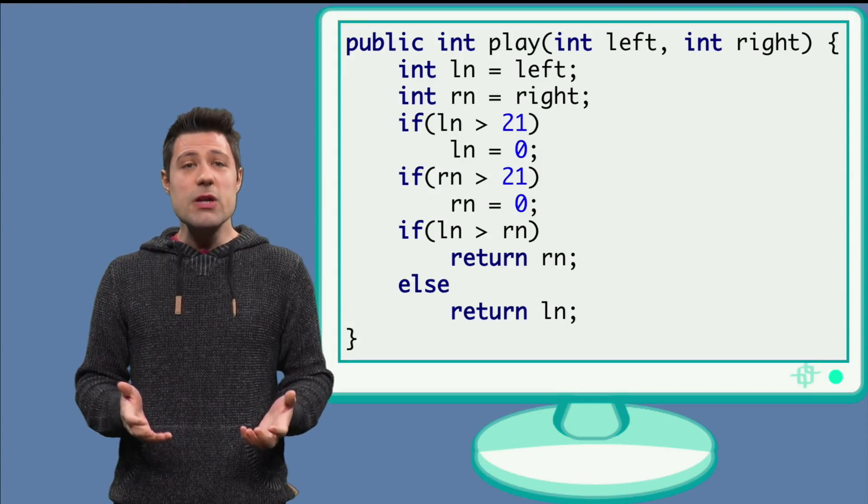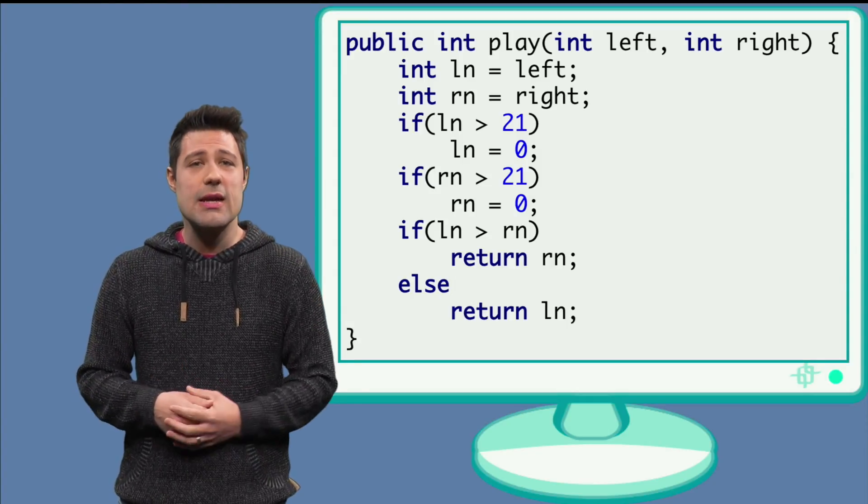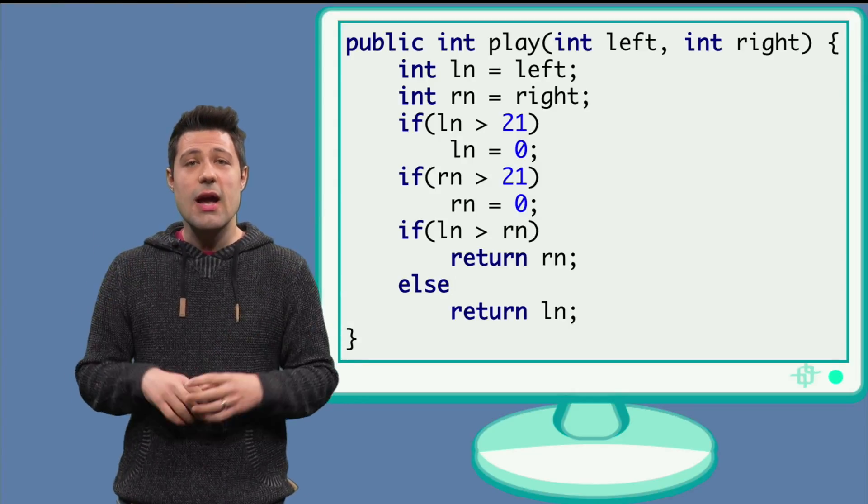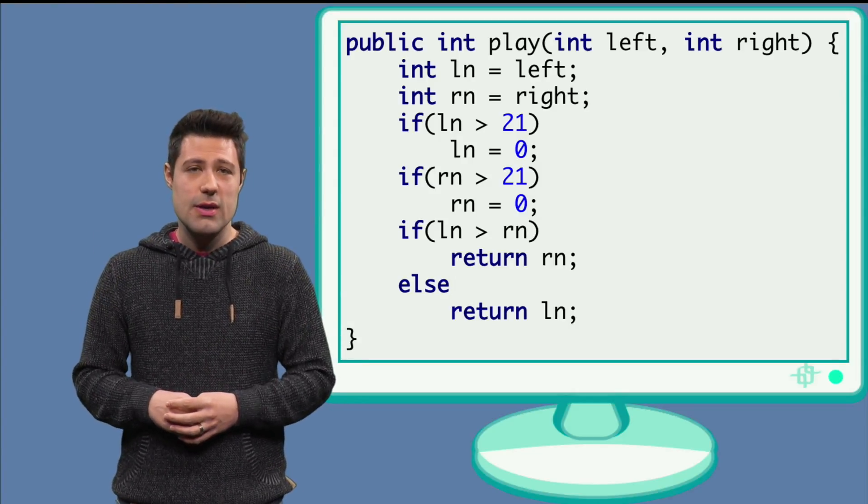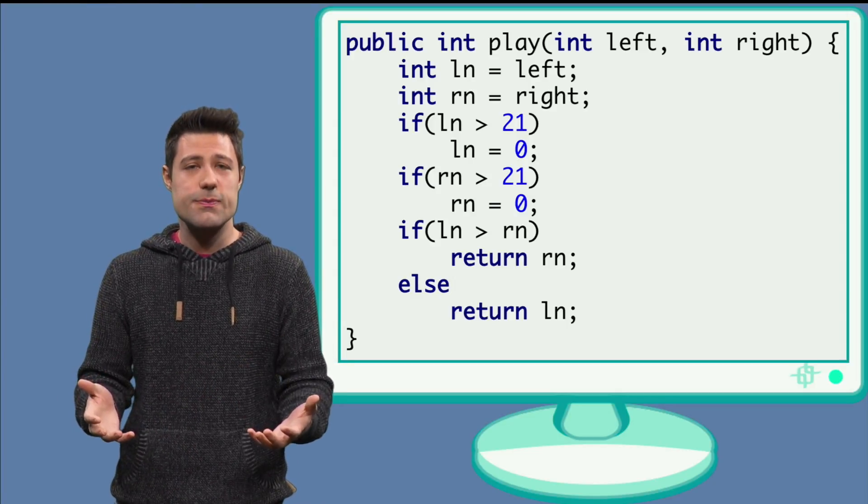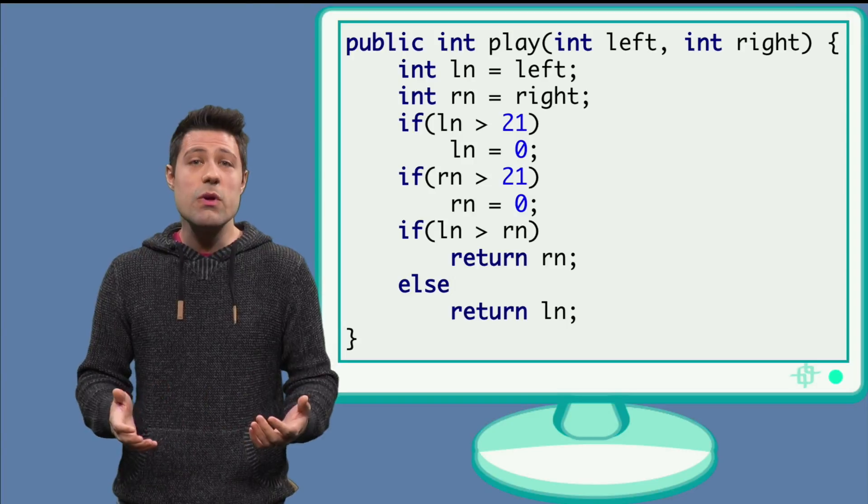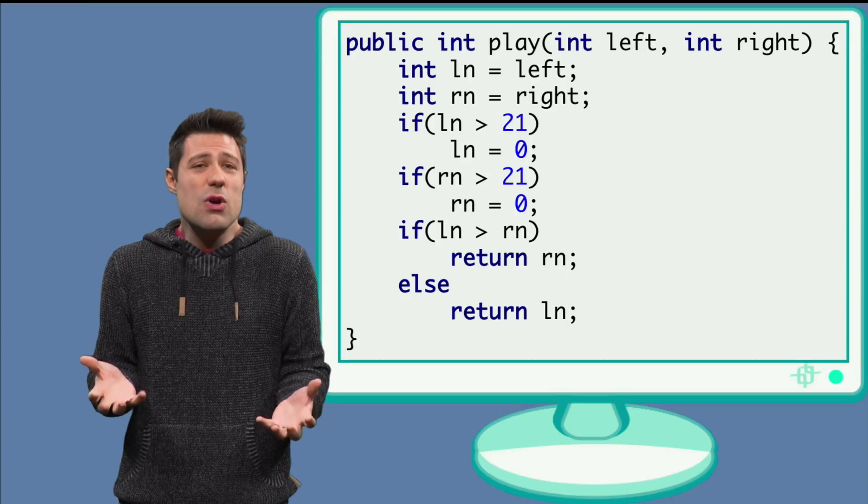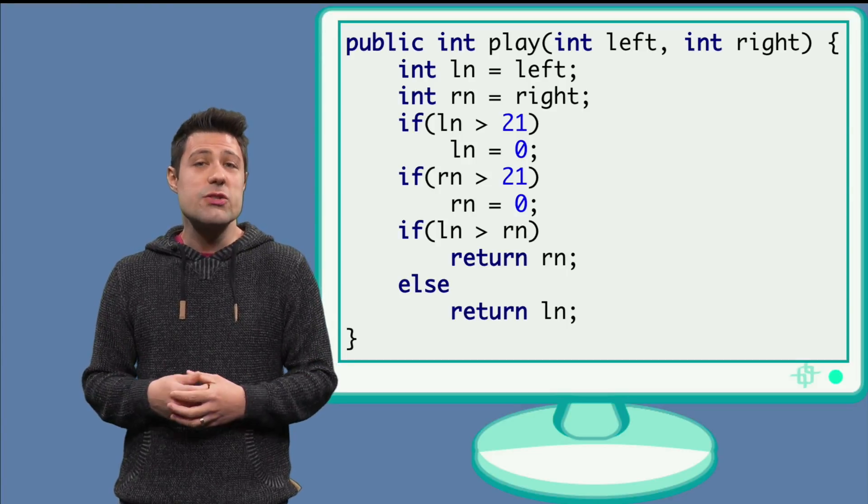When we studied functional testing, or as we also called it back then, testing from requirements, we saw that the partitions guided us to think about tests. And after having thought about the partitions, we then designed the tests. In here, we'll first define a criterion based on the source code to guide us, so we sort of know where to stop or when it is good enough.